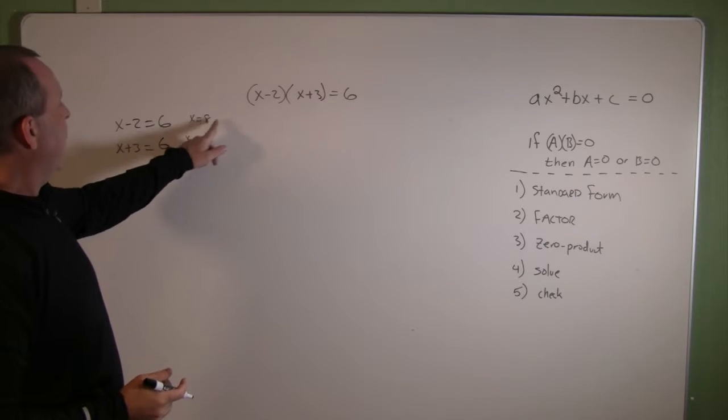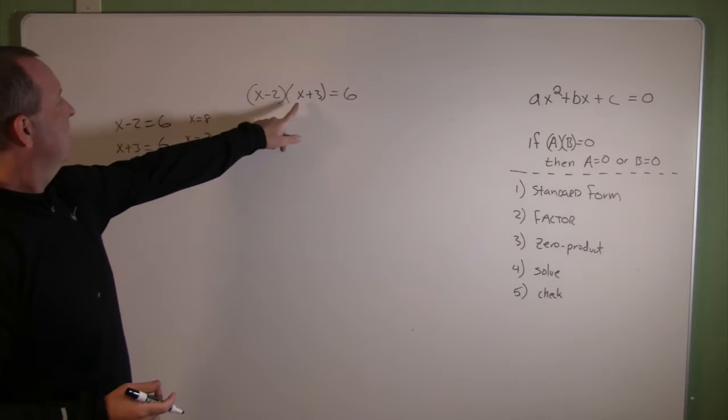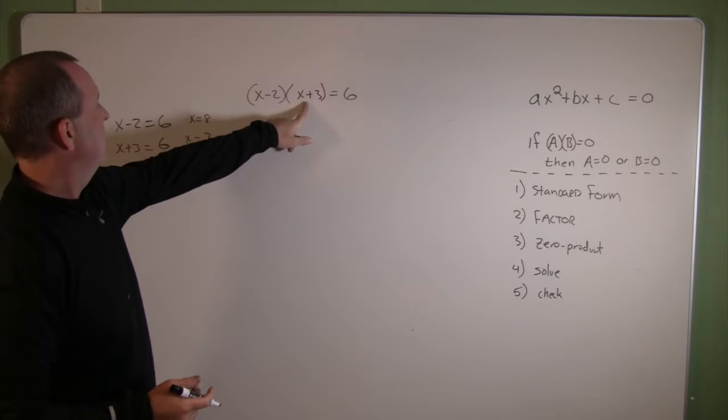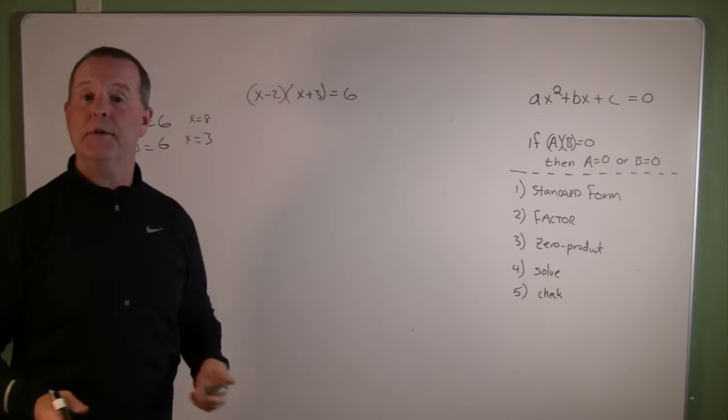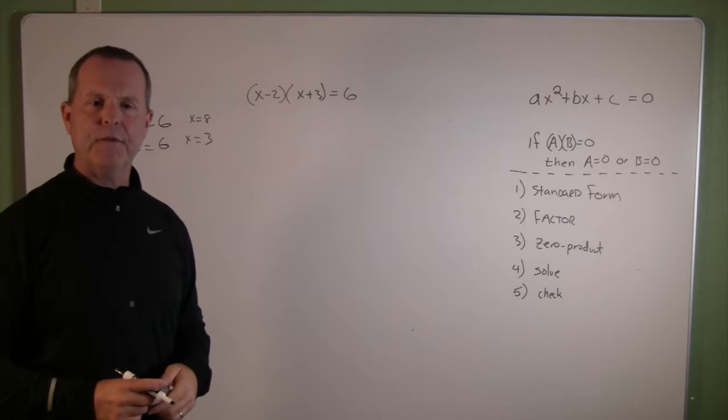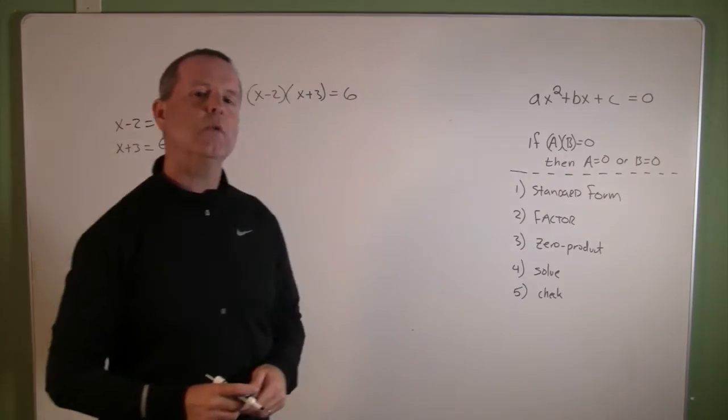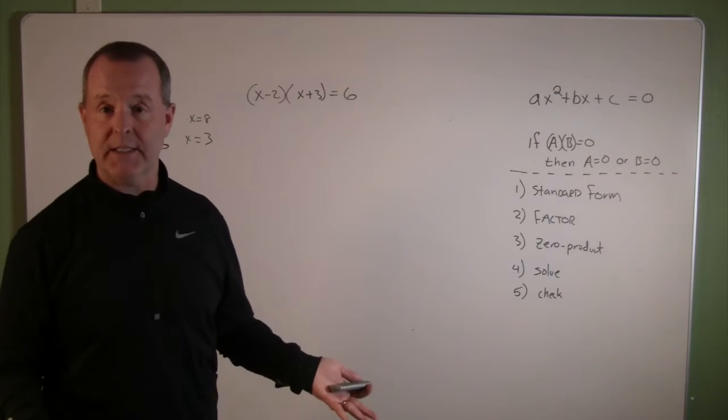Let's plug those in and find out if that's true. 8 in here, 8-2 gives me 6, 6 times 5 produces... does not produce 6, produces 30. I think I misapplied a rule. I think the zero product rule only works when it's equal to zero.